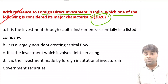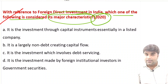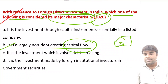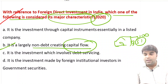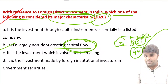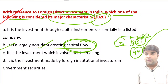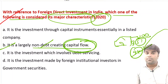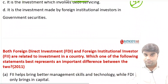With reference to foreign direct investment in India, which of the following is considered as its major characteristic? It is largely a non-debt creating capital flow. Imagine a company needs to be established with 100 rupees. The owner has 51 rupees and needs 49 rupees more. If this 49 rupees comes from a foreign country, the capital flow is coming into the country but it is not creating any debt — it is an investment, not a borrowing. Investments do not create debt. So it is a largely non-debt creating capital flow. That is the answer.